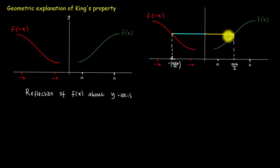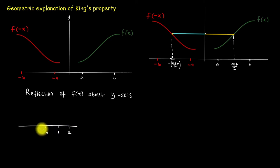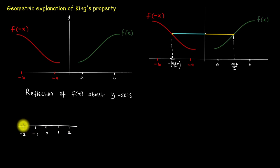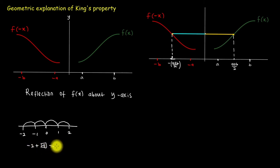On a number line, say we have zero, then one and two on the right, and minus one and minus two on the left. If I want to move from minus two to two, I would move four units to the right. So minus two plus four gives me two. That is, to move from minus two to two, I just need to add twice the distance from zero to two.